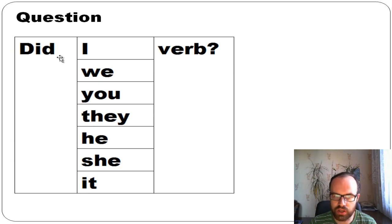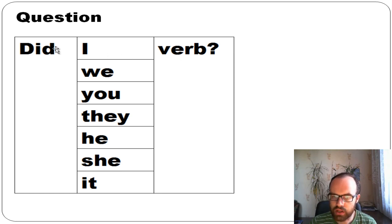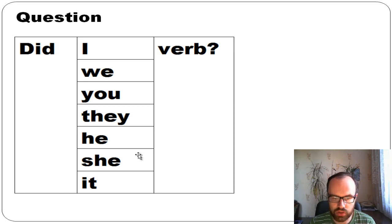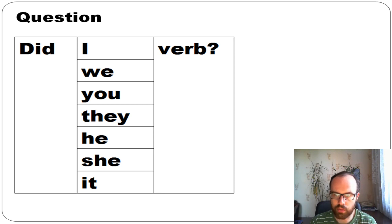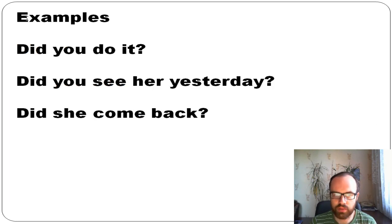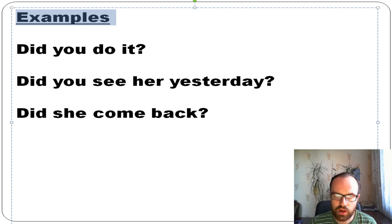To form a question in past simple, use: did + subject + verb. For example: 'Did I do it?' 'Did we do it?' 'Did you do it?' 'Did he do it?' 'Did she do it?' Let's look at more examples: 'Did you do it?' 'Did you see her yesterday?' 'Did she come back?'